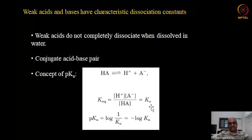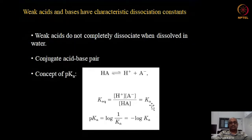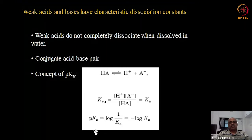For an acid dissociation, this equilibrium constant is called Ka — the dissociation constant for an acid. Just as we took the negative log to base 10 of hydrogen ion concentration to talk about pH, the negative log of this equilibrium constant Ka is a term called pKa, which we will often use in discussing weak acids.